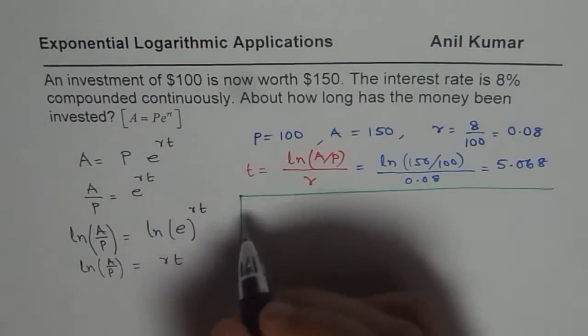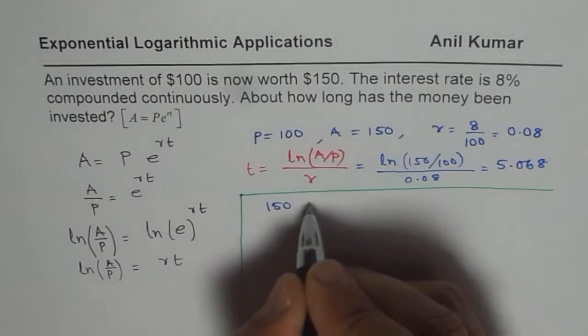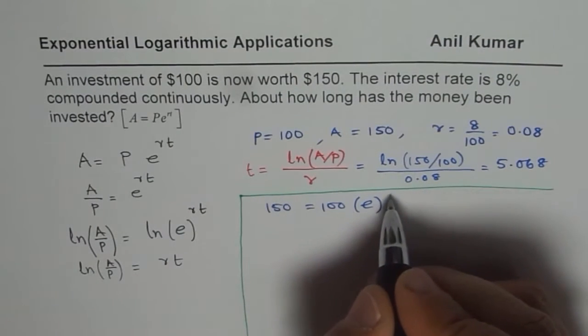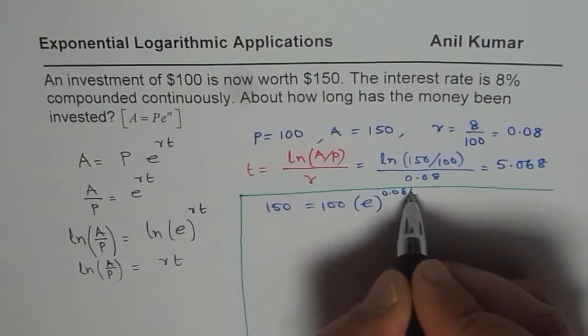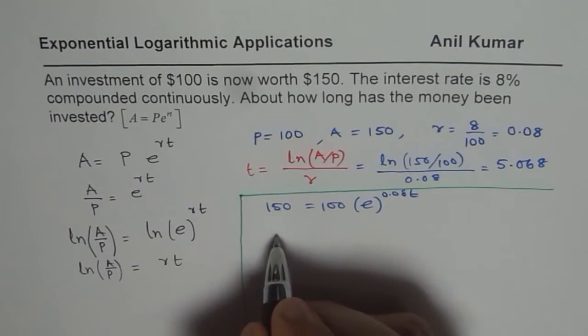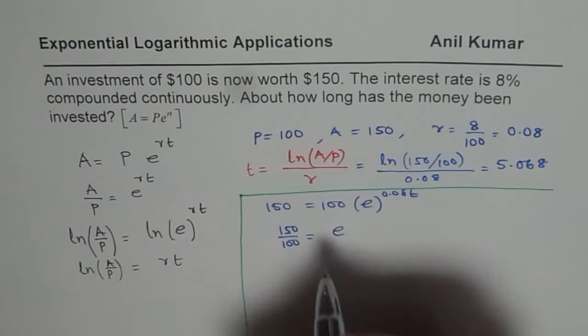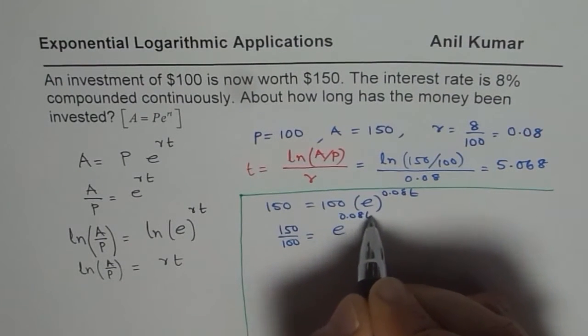we can write A, so it is 150, equals to 100 e to the power of R is 0.08 T. So we'll divide by 100. So we get 150 divided by 100, equals to e to the power of 0.08 T.